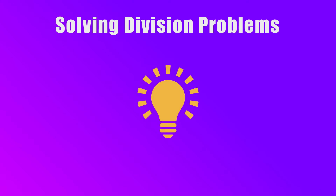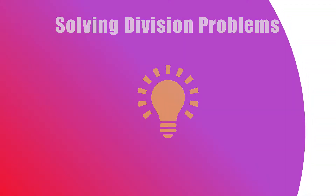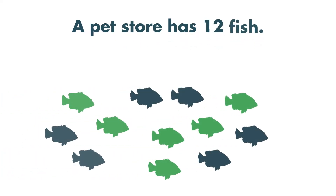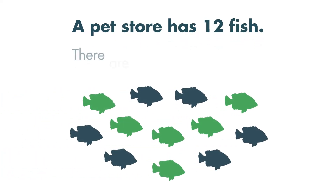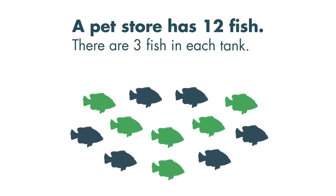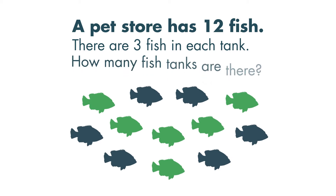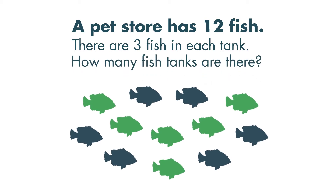Hello! In this video, we will learn how to use division to solve problems. A pet store has 12 fish. There are 3 fish in each tank. How many fish tanks are there?